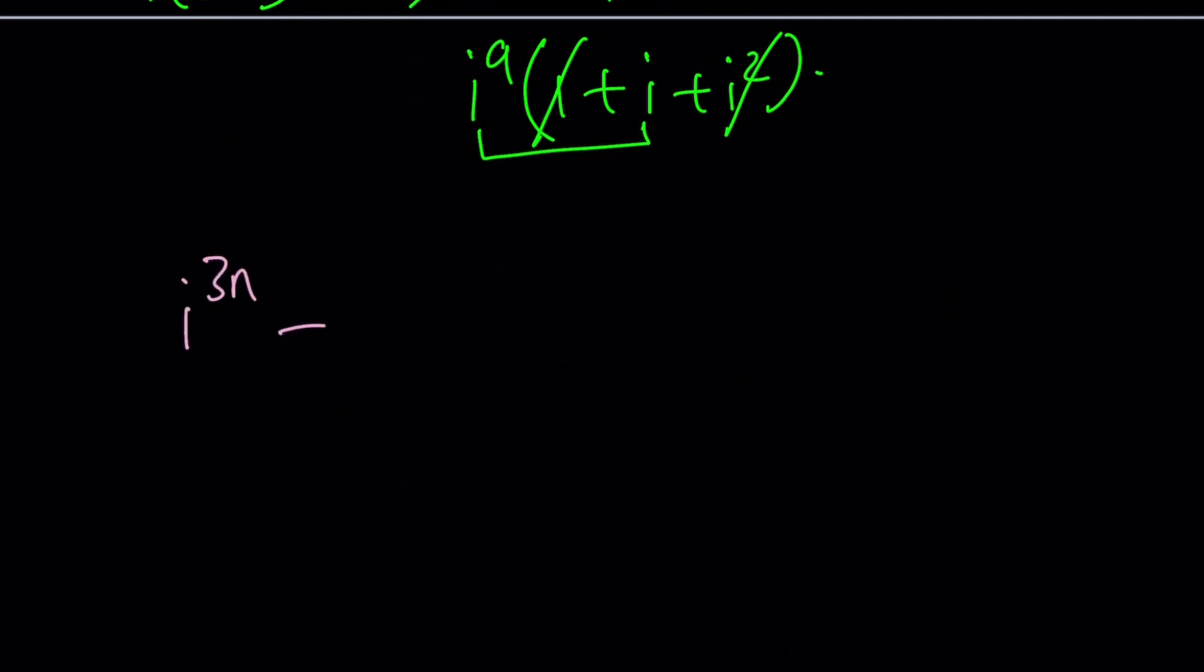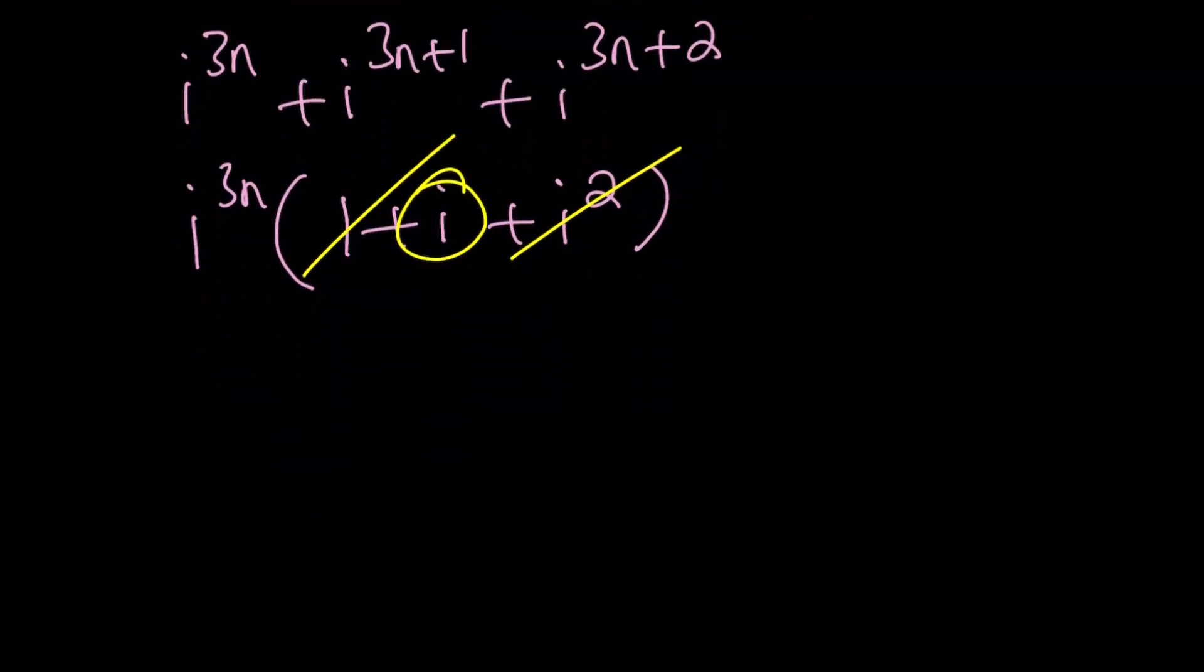So let's take a look. It means that we don't have a constant answer, constant value for this sum. It depends. Because again, 3N is not a multiple of 4. So let's go ahead and do the same strategy. Take out i to the 3N. You get 1 plus i plus i squared. We could have done this, but I just wanted you to explore a little bit with different powers, specific examples, to kind of get a feel. Now, i squared is always, always negative 1. So these two are always going to cancel out, and we're going to end up with i inside, and i to the 3N. So it's going to be i to the 3N times i to the first, and this is going to be i to the power 3N plus 1.